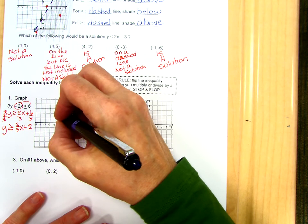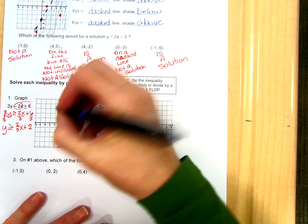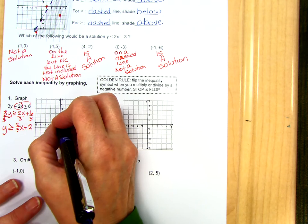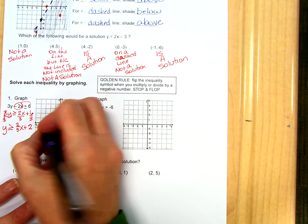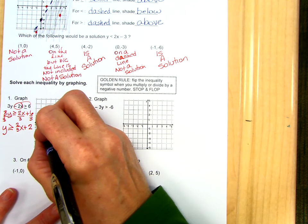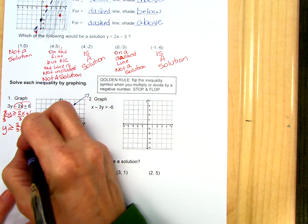So I'm going to go to the y-intercept, and then I have a slope of 2 thirds. So I'll go up 2 over 3 to get another point, or down 2 left 3 to get another point. Now because this is equals, we get a solid line. We just extend that out.